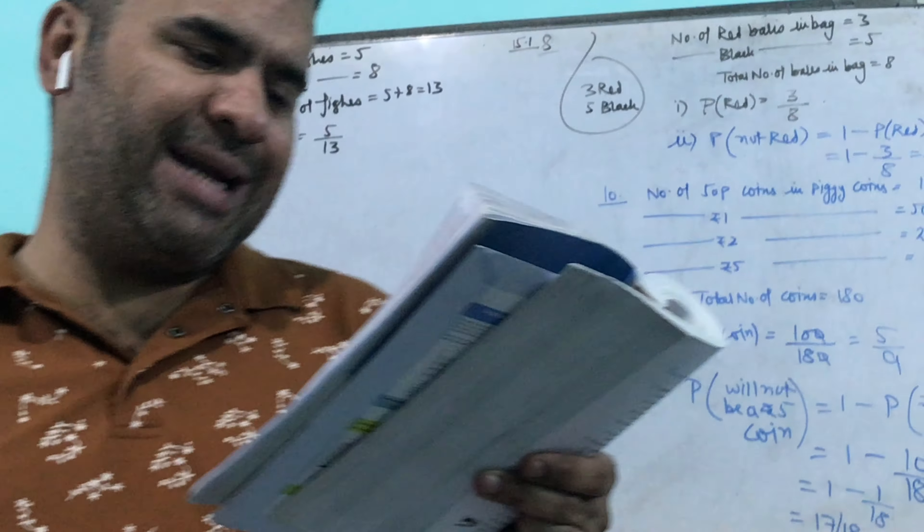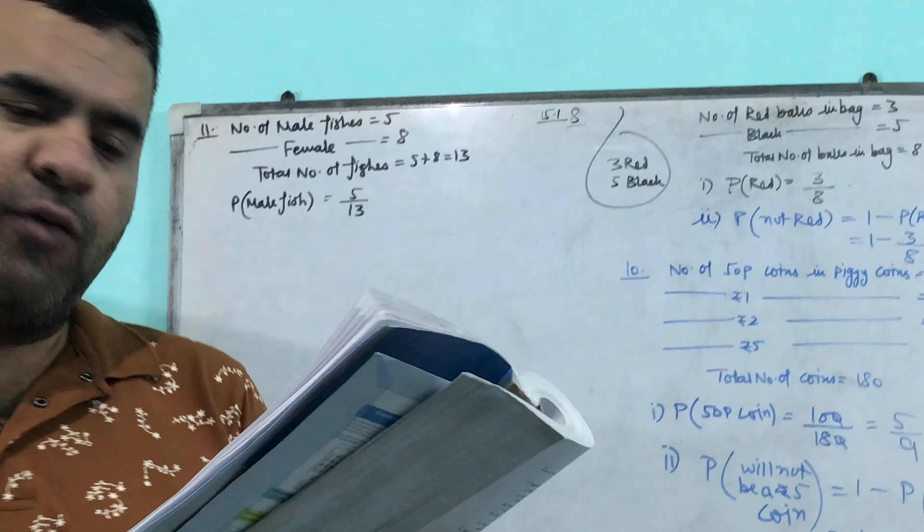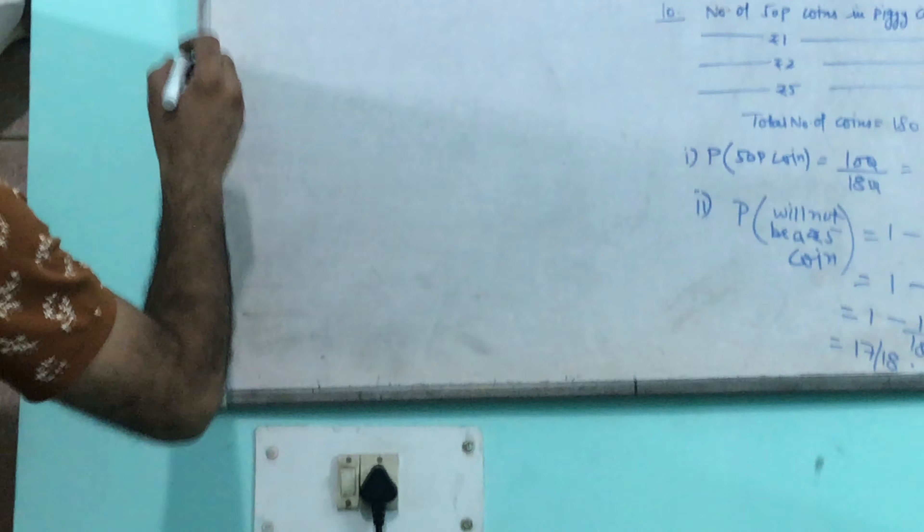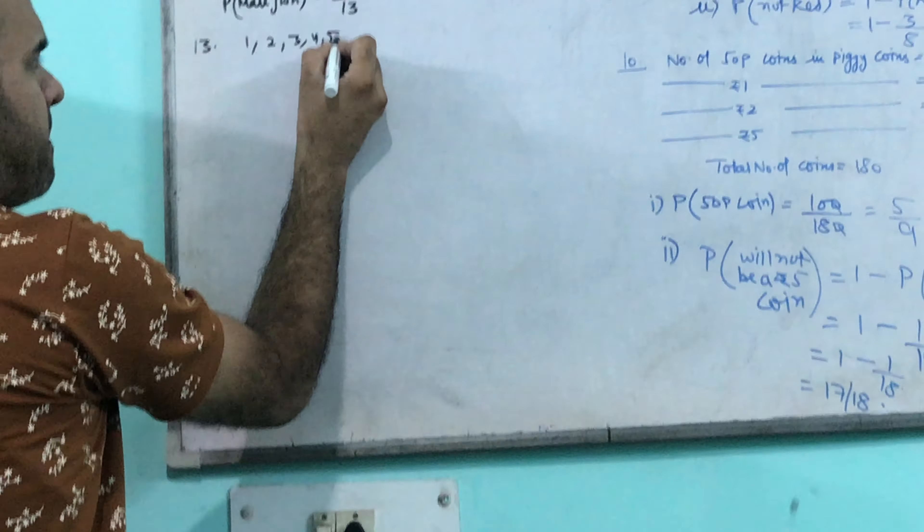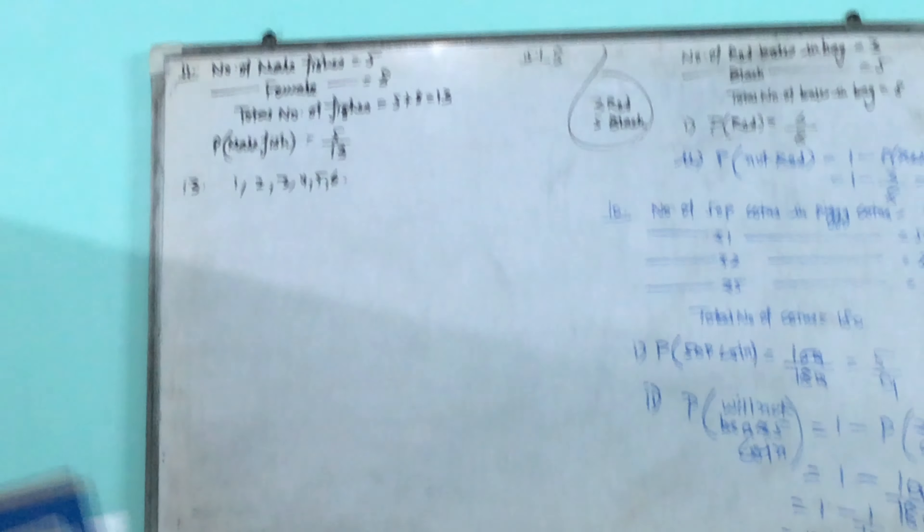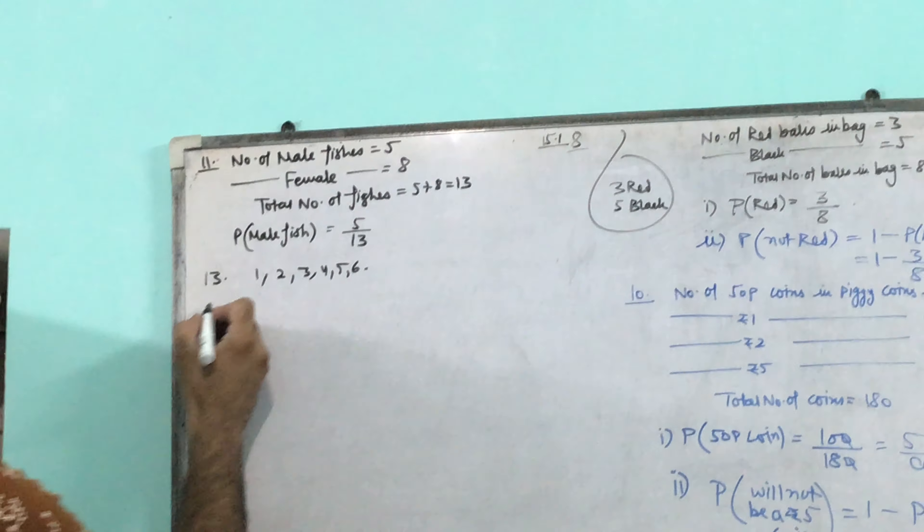13th question: a die is thrown once, find the probability of getting. If someone has a die, tell me how many outcomes are there? 6 outcomes. You know that, now tell me the first part.